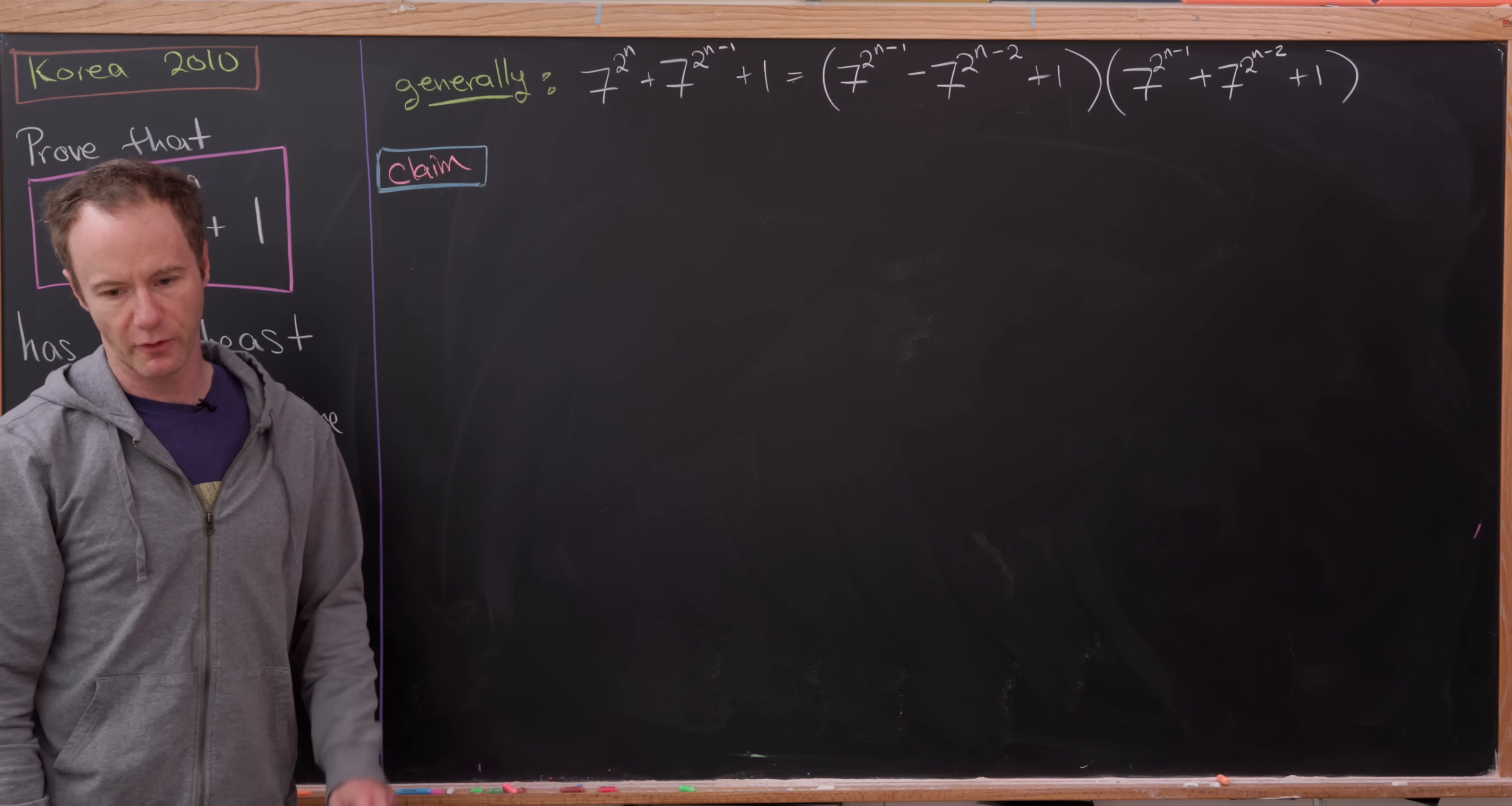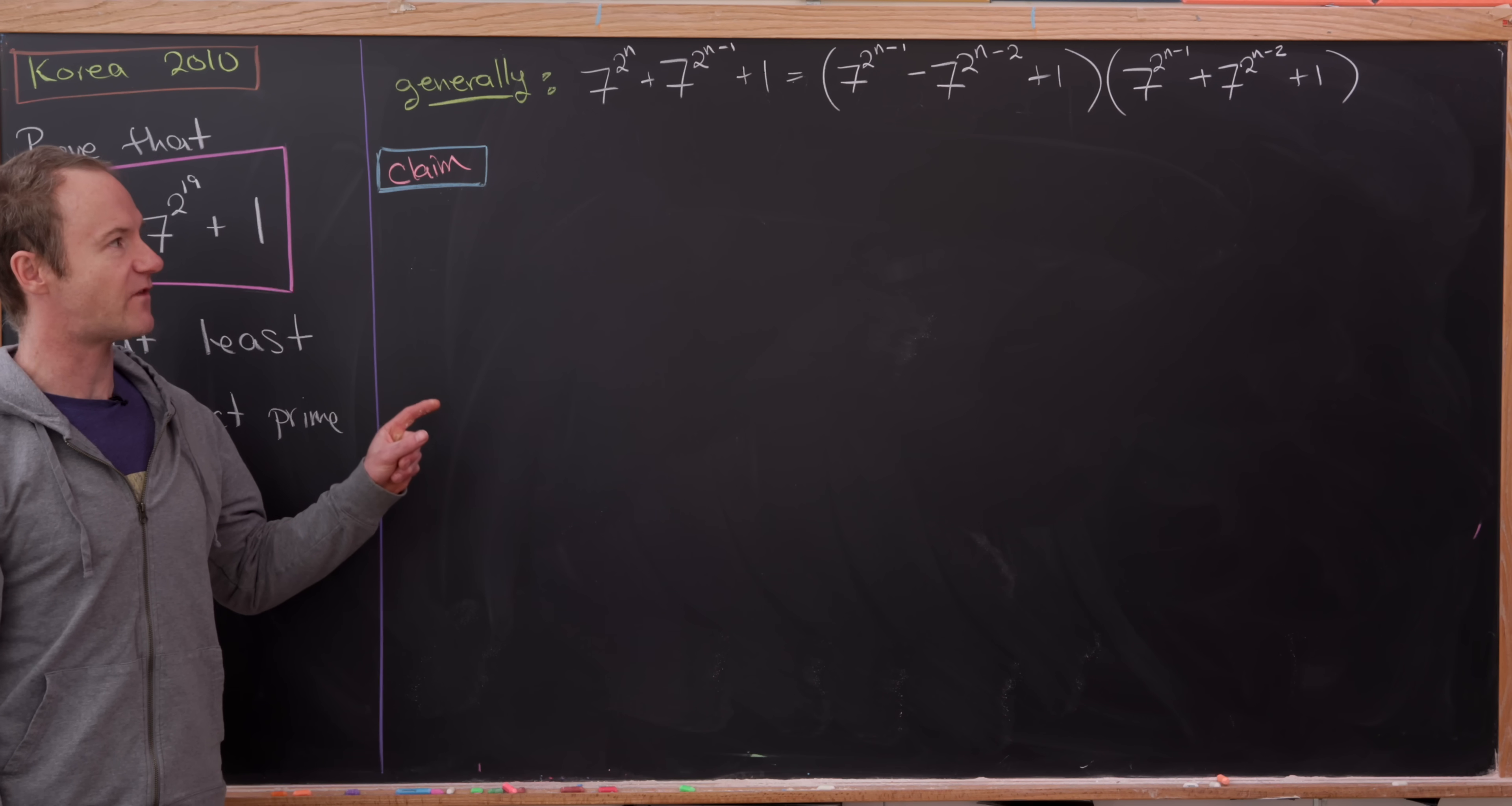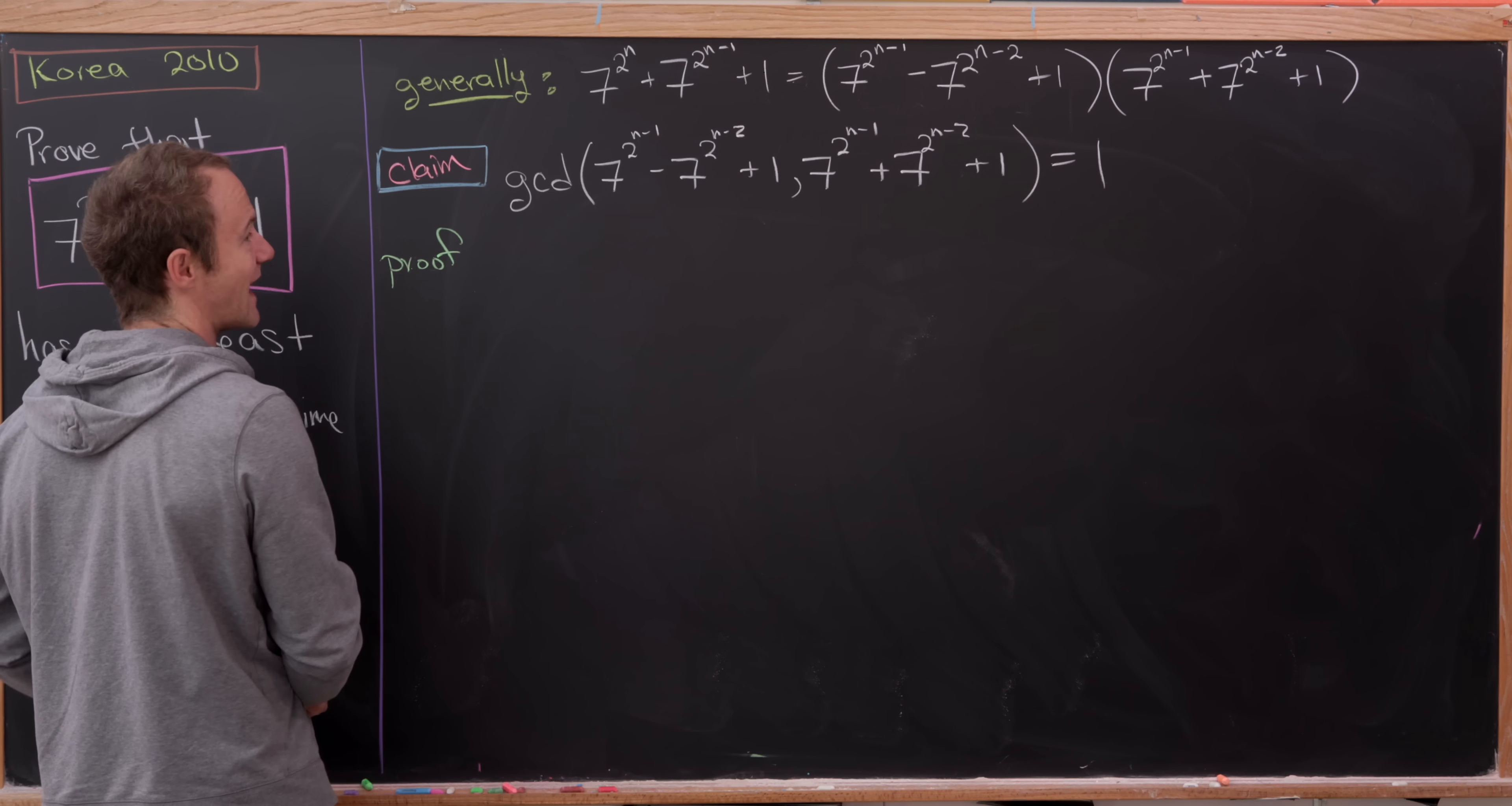So let's start here with a general version of that calculation that we made on the last board which says that 7 to the 2 to the n plus 7 to the 2 to the n minus 1 plus 1 factors with these lower powers of 7. And now we're going to make the following claim. And that claim is that these two factors that we've generated are relatively prime. So in other words their GCD is equal to 1. So let's get that written on the board. So there we have it. The GCD of those two numbers is equal to 1. That's what we'll show.